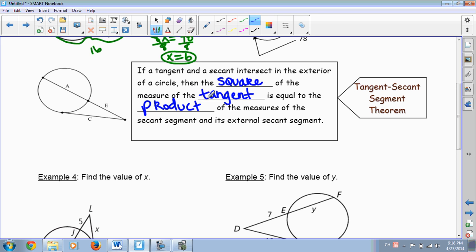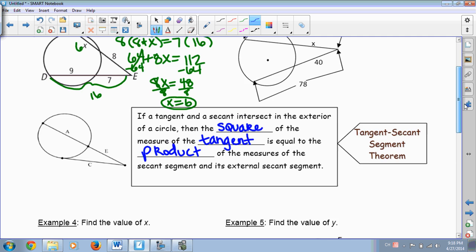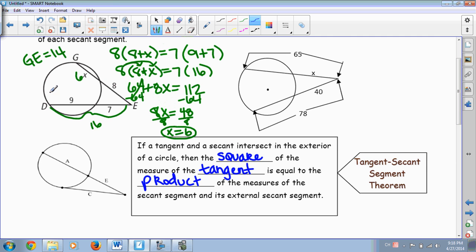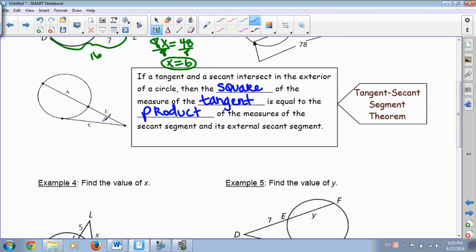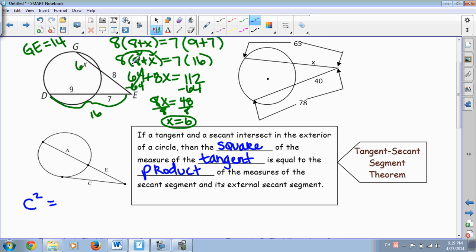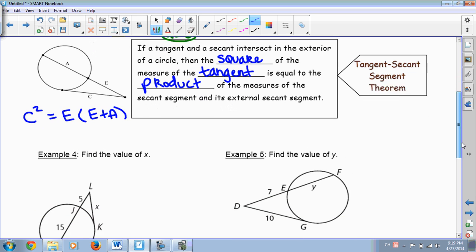Okay, so lots of words for something very simple. The difference between the problem we were just doing was that these were two secants, and the problem we're doing now is there's only one secant, and then there's a tangent. So what we're going to do is we're going to take our tangent and square it. So in this case, it's AC, and we're just going to square it because it says then the square of the measure of the tangent. That's equal to the exact same thing we were doing up here where we took the outside piece, E, and multiplied it times the sum of both of the pieces of the secant. So add both pieces together, E plus A, or we could have said A plus E. It doesn't matter.